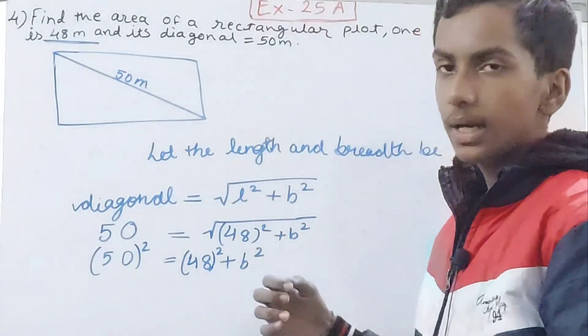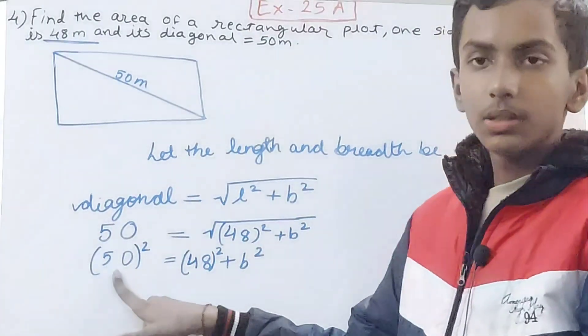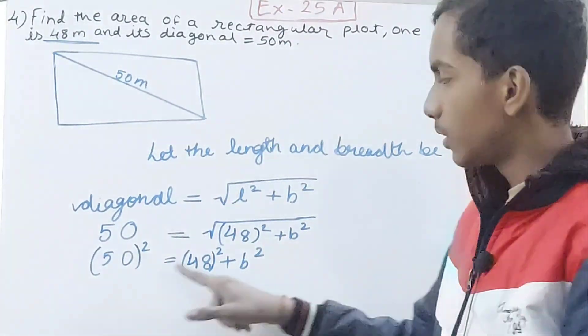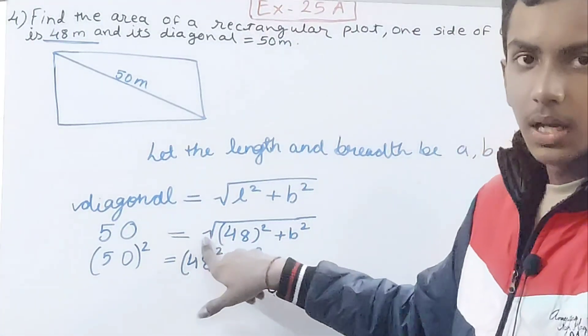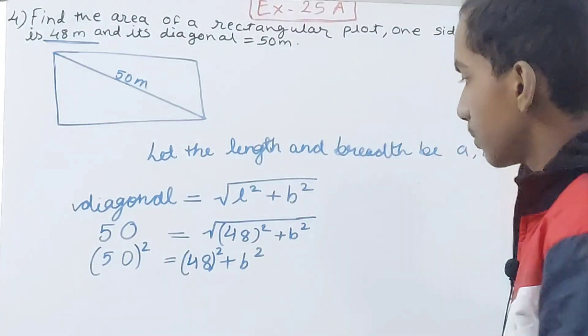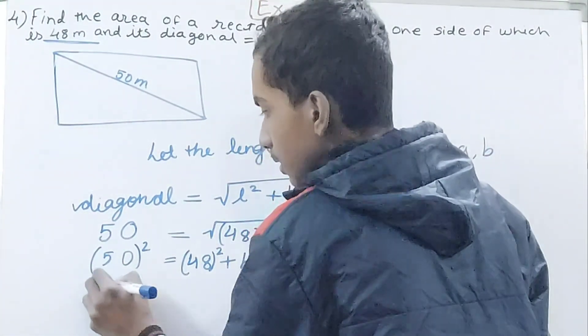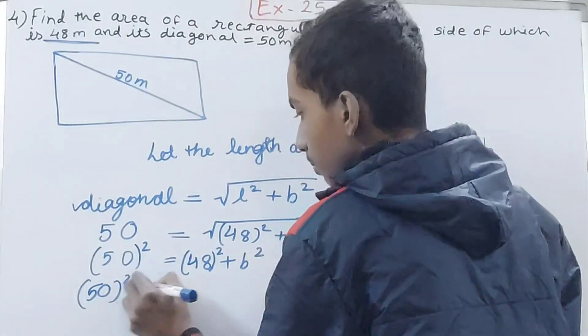But this 50 will also get squared. So we will remove the root sign from here, then on the other side that number will get squared. So 50² minus 48² is equal to b².